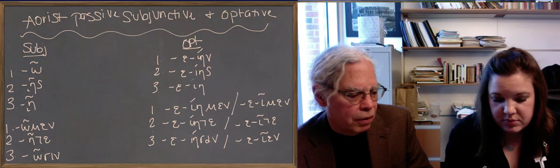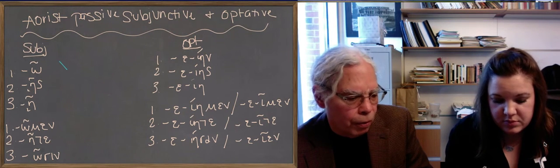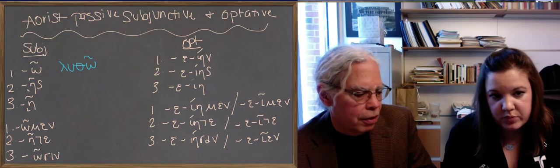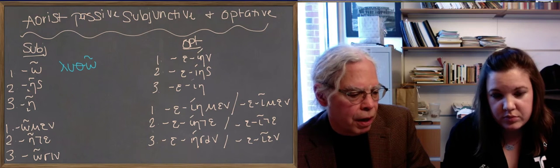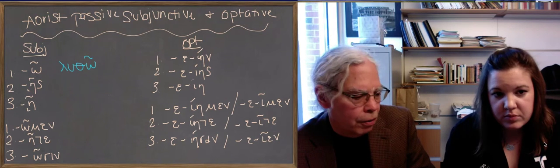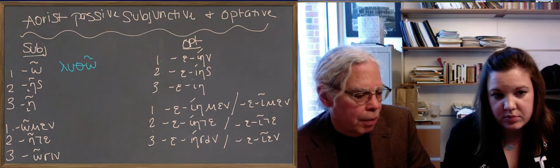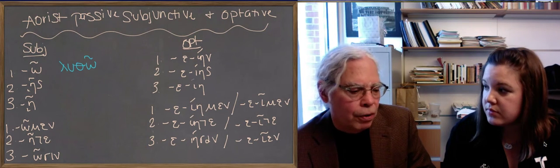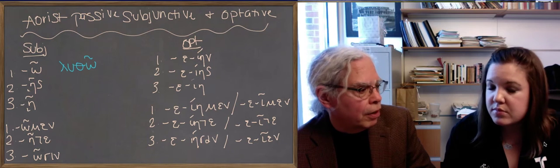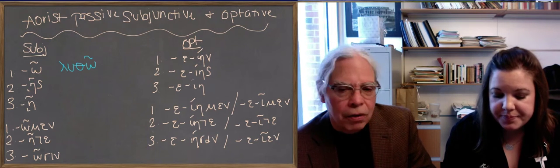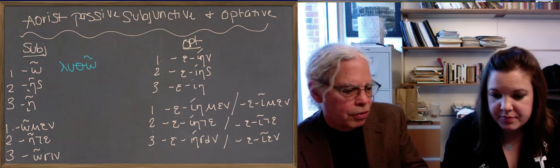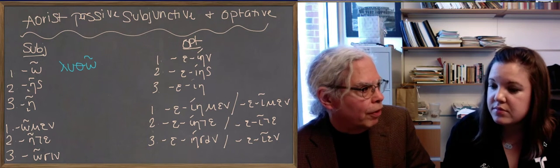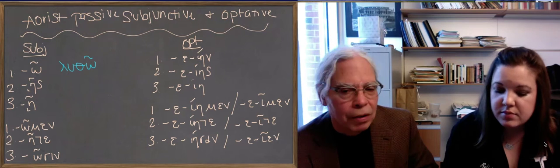For example, for luo, the aorist passive subjunctive would be lu-tho with a circumflex accent. The circumflex accent is there in all the forms over the thematic vowel, over the alternating o and a, because what's happened is that those long vowels, which mark the subjunctive, have coalesced with the eta that's the sign of the aorist passive. So that contraction process, since those are long vowels, there was an accent always on the eta. When the two of them collapsed into one vowel, you get a circumflex.